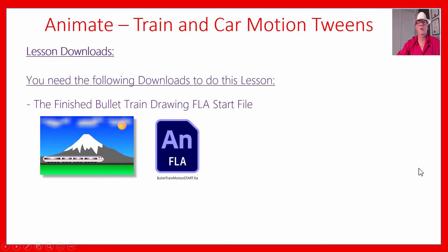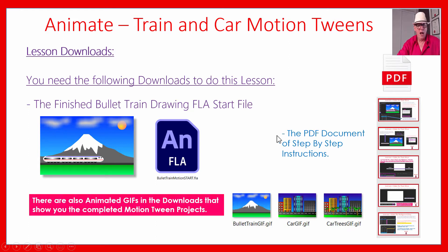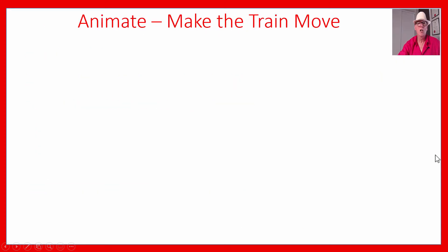For lesson downloads, go to the video description and you'll see a link. If you haven't finished the bullet train lesson, you can get this motion start file, which has all the drawing of Mount Fuji, Japan, plus the bullet train — you can do the lesson using just that. There's also a PDF document with step-by-step instructions; many students find it easier to read the PDF and try it that way, then look at the video index if they have problems. The downloads also include animated GIFs showing what the finished animation should look like.